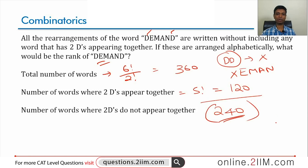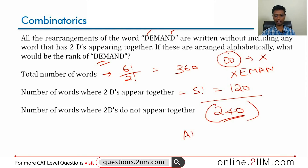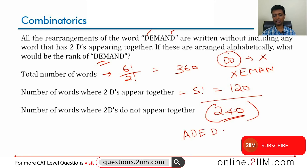The first such word would probably start with A — the earliest letter in the English alphabet. Technically it should be A, D, D, but two D's cannot appear together. So the first word on the list would be A, D, E, D, M, N.